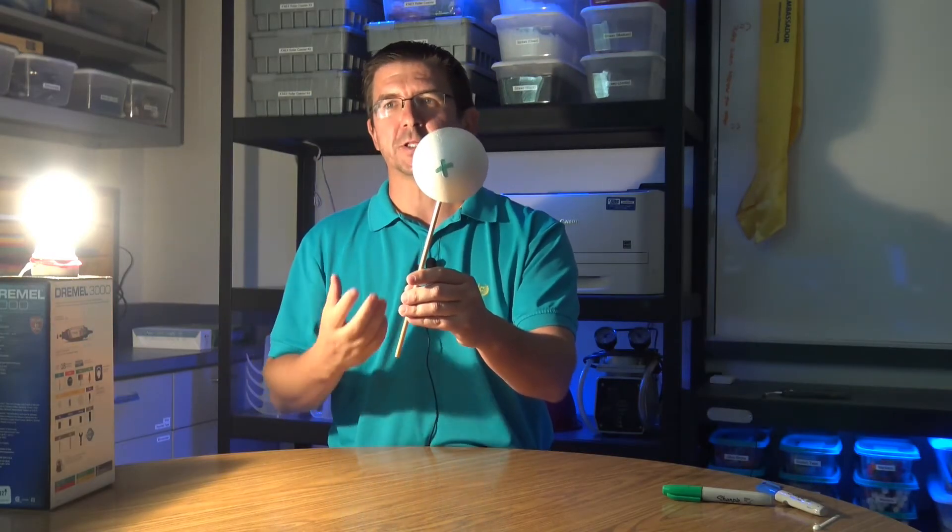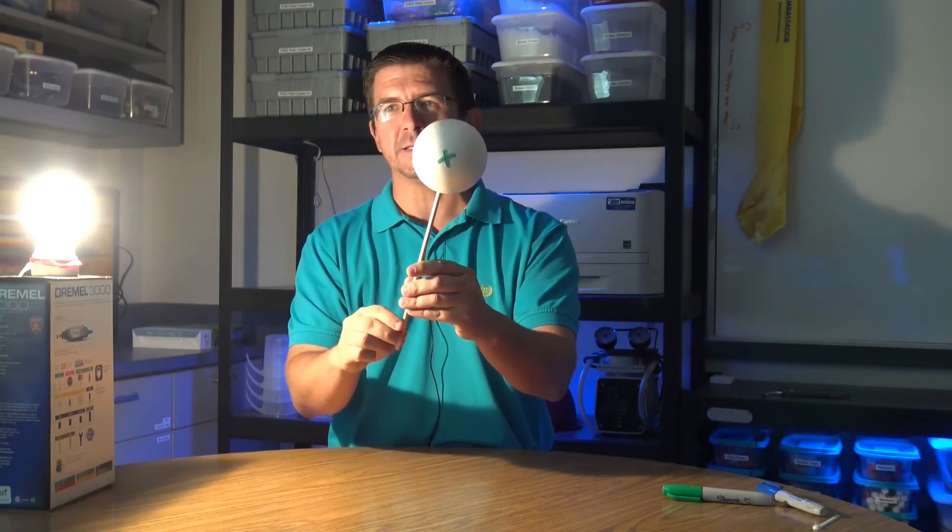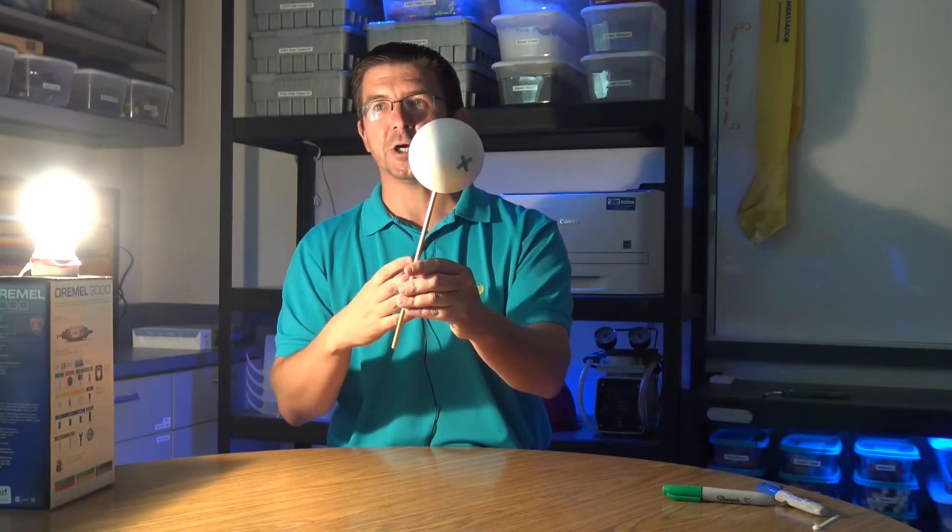It starts getting a little darker, it starts getting a little darker because it's moving away, it's getting less of that sunlight until we get around to the other side where we're not getting any sunlight at all.